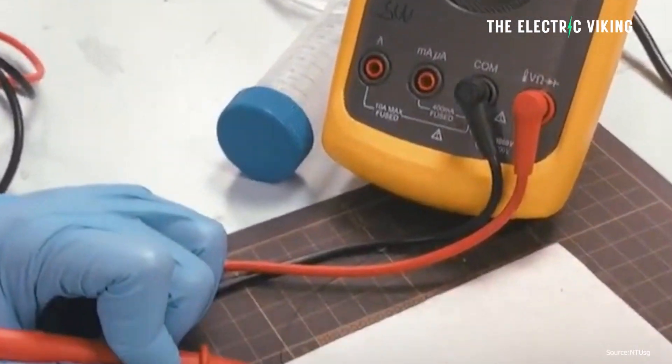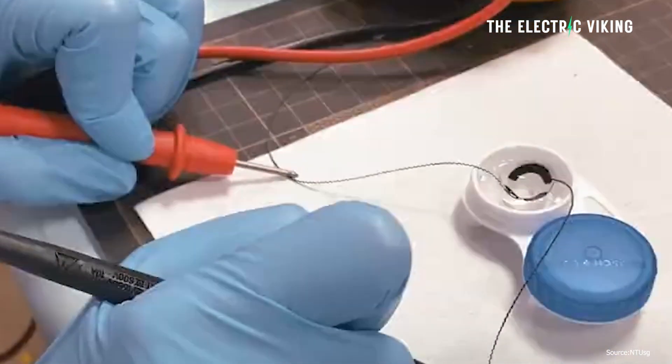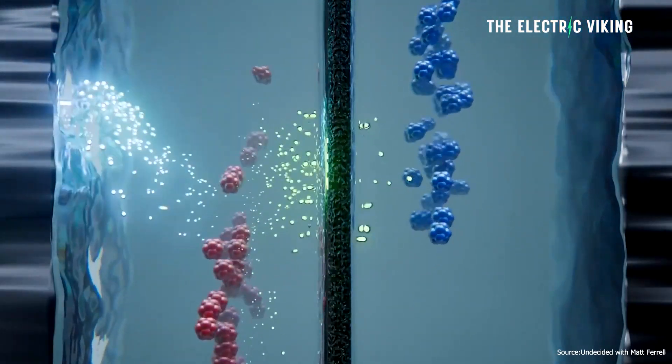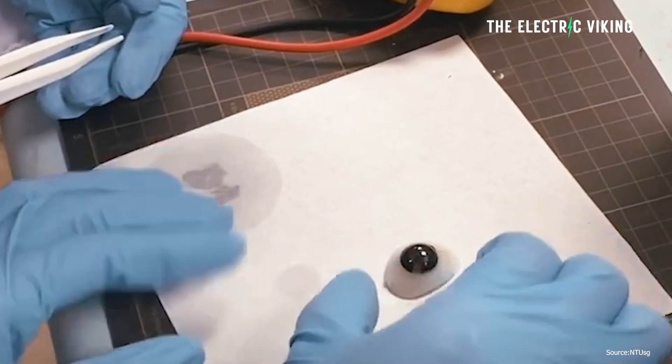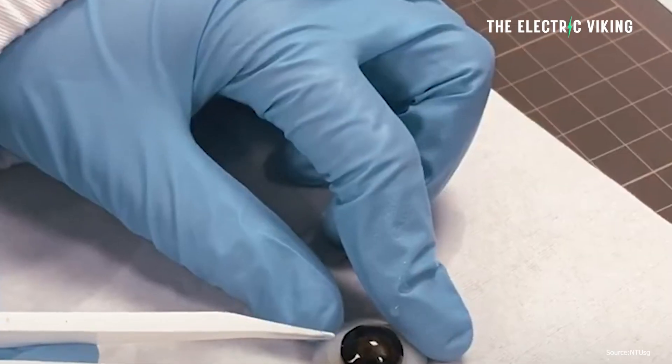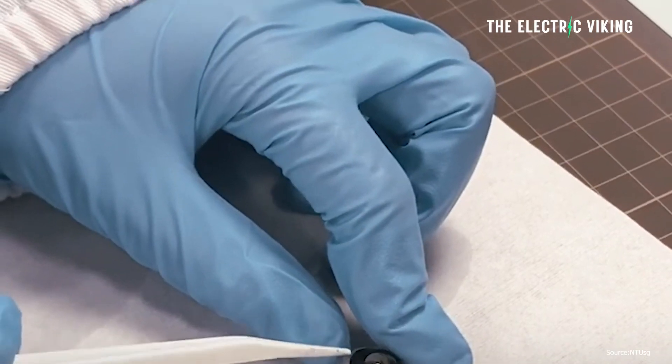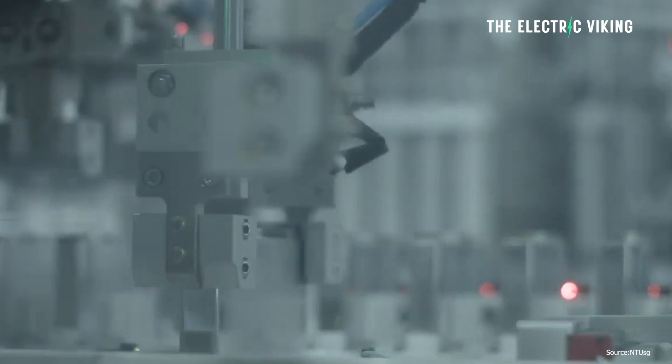Besides the charging mechanism, it relies on just glucose and water to generate electricity. Both of which are safe to humans and will be less harmful to the environment when disposed of compared to conventional batteries.